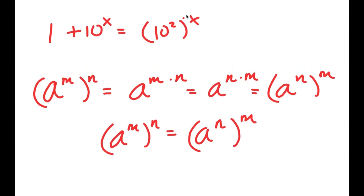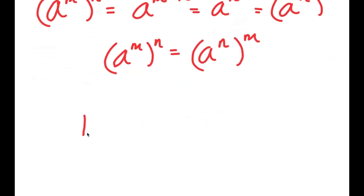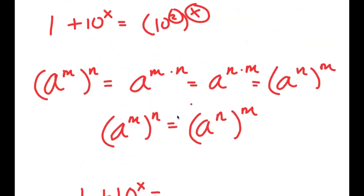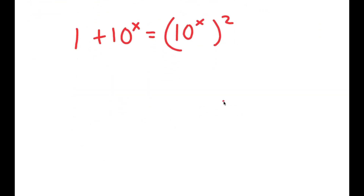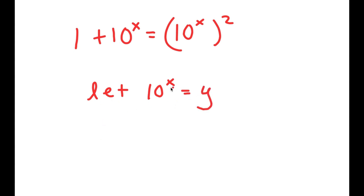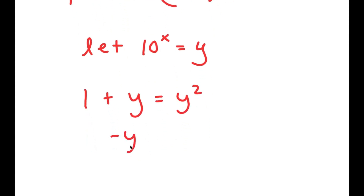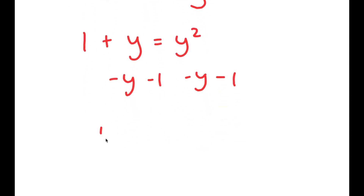So for 10 to the power of 2 to the power of x, I can switch the values of 2 and x. So now I get 1 plus 10 to the power of x is equal to 10 to the power of x to the power of 2. Now from here, I'm going to let 10 to the power of x equal to the variable y. Substituting y, I get 1 plus y is equal to y squared. Now I'm going to subtract y and 1 on both sides.